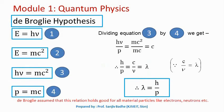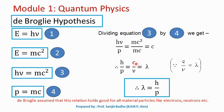De Broglie supported his hypothesis using Planck's relation E = hν and Einstein's relation E = mc². Since both equal the photon's energy, hν = mc². The momentum of the photon is p = mc. Dividing equation 3 by equation 4: hν/p = mc²/mc, so one c cancels and m cancels, giving hν/p = c, or h/p = c/ν. And c/ν is nothing but λ, the wavelength.